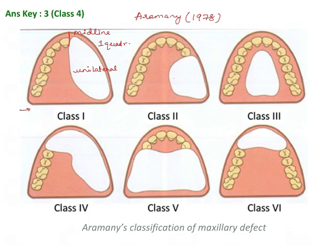Class 2 defect is again a unilateral defect not crossing the midline, involving posterior teeth distal to the canine — the canine may or may not be absent.